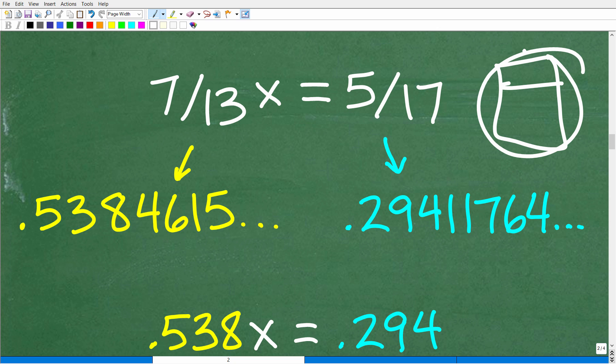Now, some calculators, matter of fact, a lot of the modern calculators, like scientific calculators, like TI-30, I want to say. Well, there's a ton of them. You can switch from decimals to fractions, and that's fine. But a lot of students don't even realize that. So what they'll do is they'll go, all right, 7 divided by 13, they just start turning these things into decimals. So 7 divided by 13 is going to be the decimal, 0.5384615. Well, this goes on and on and on and on. 5 over 17, if you turn that into a decimal, you're going to get 0.29401764.